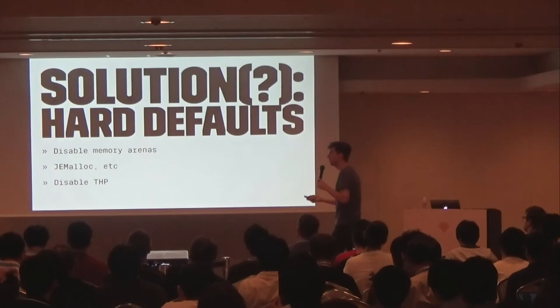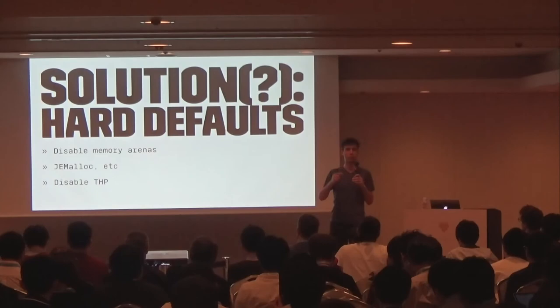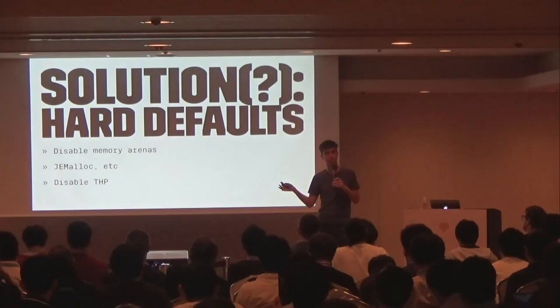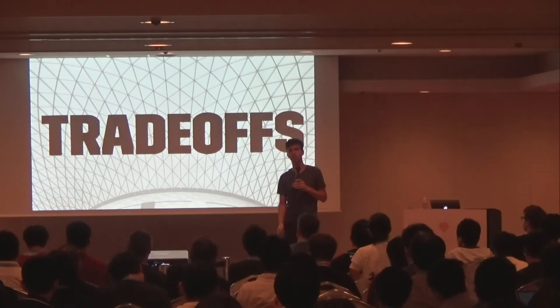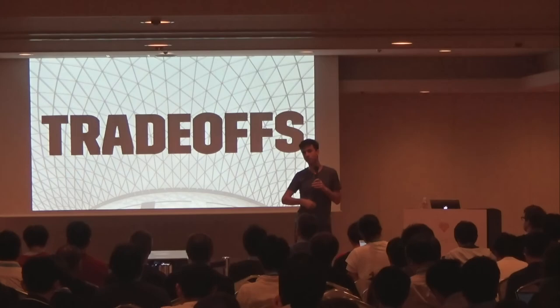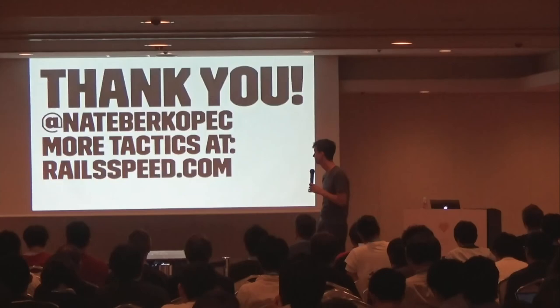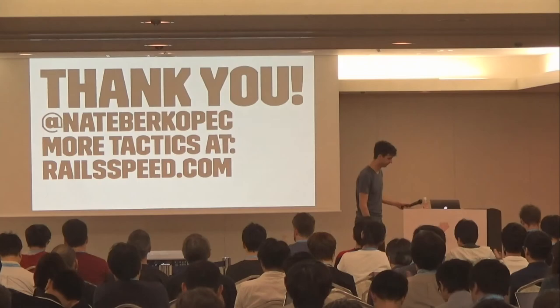We could also just give hard defaults — like force everyone to use jemalloc, or force everyone not to use memory arenas — but this almost never gets merged in Ruby core. My point is that there is always a tradeoff between using memory and making the program faster. These solutions will never fit everyone. You have to do what's right for your application. Thank you very much.